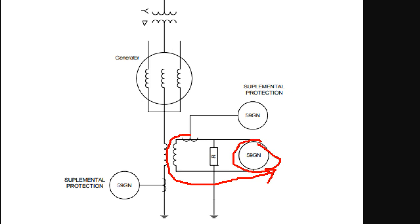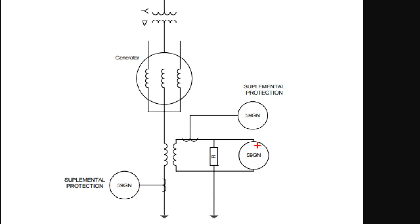So you will use the relay. This is 59GN — you have to go to the generator neutral. If the voltage goes below the lower limit, we will operate the relay. This is neutral overvoltage protection.